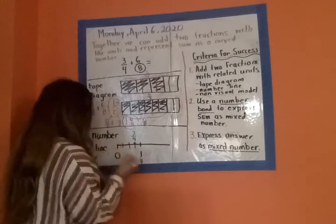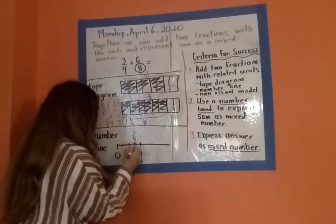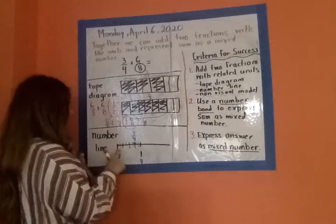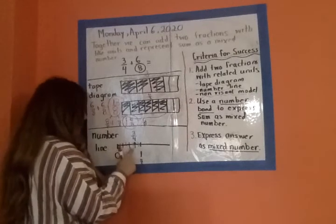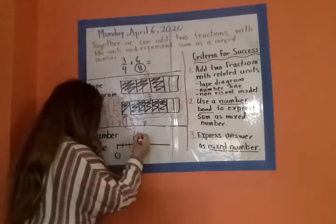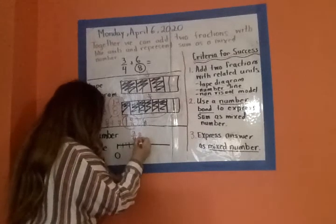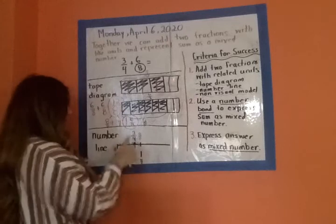And so again, I'm going to go back. One eighth, two eighths, three eighths, four eighths, five eighths, six eighths, seven eighths, and eight eighths. We know eight eighths is equivalent to one just to make sure. Alright.